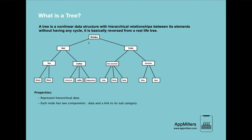The third property is that at the top we have a base category, and then we have subcategories under it. In a typical tree, we can have as many subcategories under one category as needed — there is no limit. These are the properties that can be derived from this diagram.